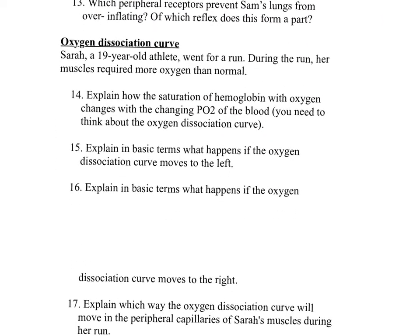The next case study is the oxygen dissociation curve. Sarah, a 19-year-old athlete, went for a run. During the run, her muscles required more oxygen than normal. Question fourteen: explain how the saturation of hemoglobin with oxygen changes with the changing PO2 of the blood. The amount of oxygen bound to hemoglobin depends on the partial pressure of oxygen. As PO2 decreases, hemoglobin's ability to hold onto oxygen also decreases, meaning more oxygen will dissociate from hemoglobin in areas with a low PO2. In highly saturated arterial blood, hemoglobin is stable and holds tightly onto bound oxygen.